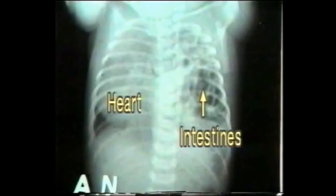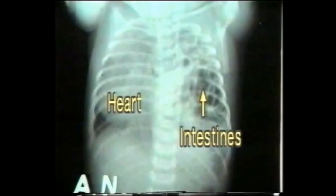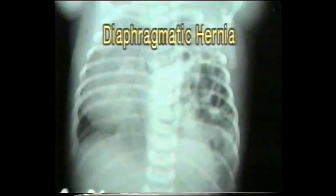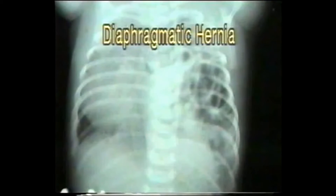This X-ray of the chest shows multiple coils of intestines on the left side. Herniation of the abdominal contents into the chest through the diaphragm is termed a diaphragmatic hernia. In this X-ray, the hernia has pushed the heart to the opposite side and compressed both lungs, causing serious respiratory embarrassment.